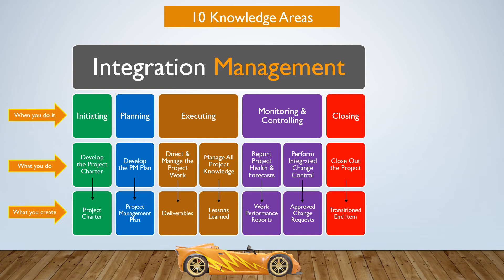Once all the project work is done, we can close out the project — that means all the deliverables have been created. Closing out the project means we're going to have an end item. For example, if you build a house, the end item is the completed house, and we need to transition that end item over to our customer so that they can use it. Because we're done with the project, we now need to give that to the customer for their benefit.